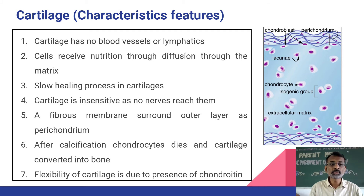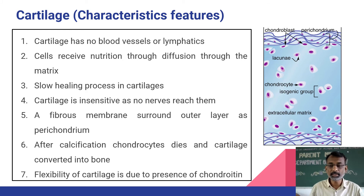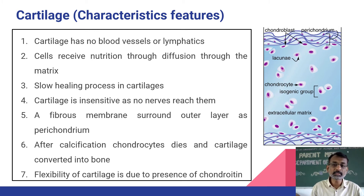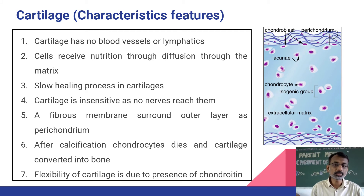Cartilage has no blood vessels or lymphatics. The cells of the cartilage receive nutrition through diffusion from the matrix. Because there is no blood supply, a slow healing process is observed in the cartilage — it takes a lot of time to recover from any injury.